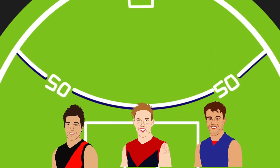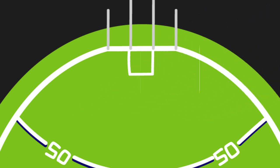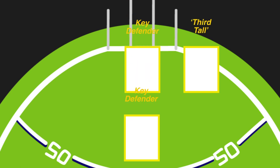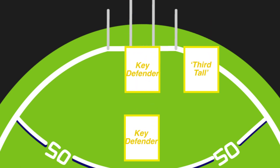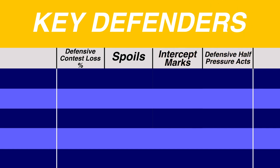The backline proved the hardest area of the field to settle on, with many of the stats available feeling inadequate for judging how impactful defenders were. Nonetheless, we pushed ahead and were greeted with some intriguing results. We decided the backline would be best suited with three talls, reflecting teams that sometimes play two key forwards alongside a 2nd ruckman, and a third tall who provides defensive cover and drops off to intercept. The stats selected were lowest defensive contest loss percentage, spoils, intercept marks, and defensive half pressure acts.